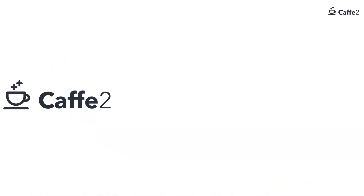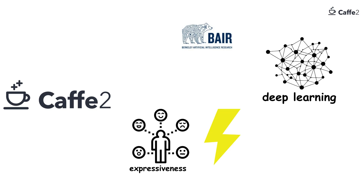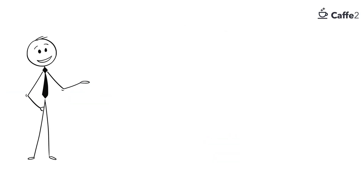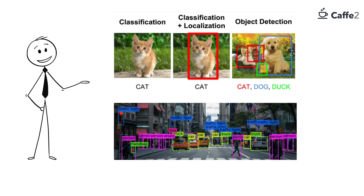Caffe, developed at Berkeley AI Research, is one of the first major deep learning frameworks focused on speed, expressiveness, and modularity. It's particularly well-suited for image classification and computer vision tasks, with many pre-trained models available for immediate use.